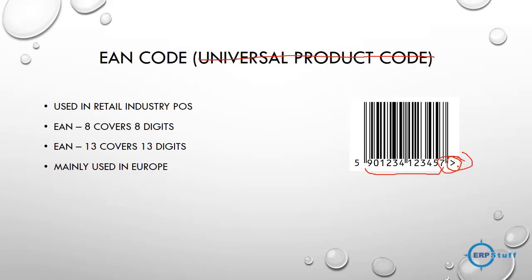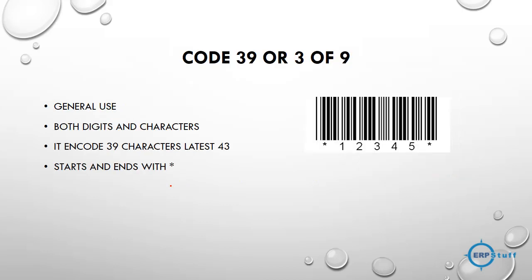Code 39 (3 of 9) is freely available — you can download a font and use it. It supports both digits and characters. It can encode 39 characters, with an extended version going further. Importantly, it starts and ends with an asterisk (*). The barcode font itself does not print the asterisk, so your data string must include asterisks on both sides for the scanner to recognize it as Code 39.